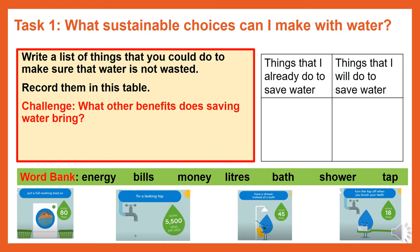Below in the green is a word bank with different words that you can use, such as energy, bills, money, litres, bath, shower, and tap. Once you have finished that task, try the challenge: what other benefits does saving water bring?